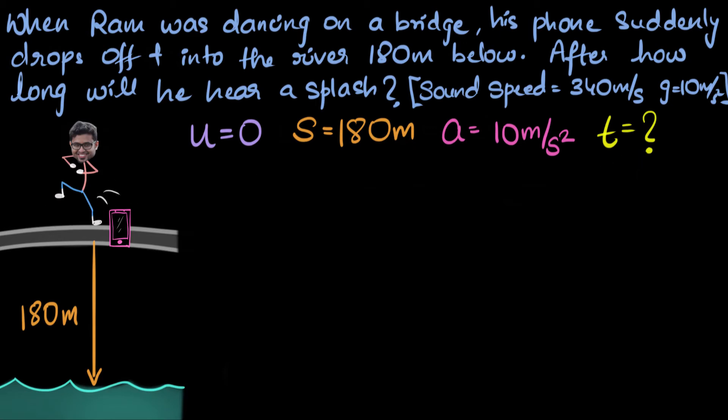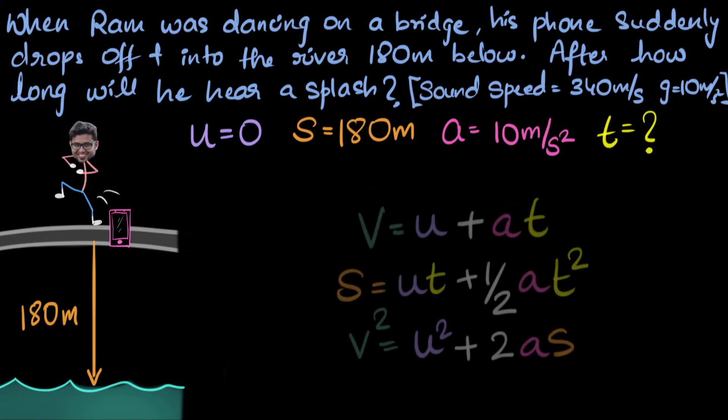And you might have learned that there are three equations of motion: v equals u plus at, s equals ut plus half at squared, and v squared equals u squared plus 2as. Which one do we use? Let's look at them one by one. If you look at the first one, we have v, which is the final velocity. That's something we don't know. u we know, a we know, t also we don't know. So in the first equation, there are two unknowns and we can't do any calculations. So the first equation is useless.